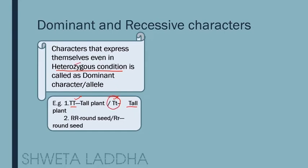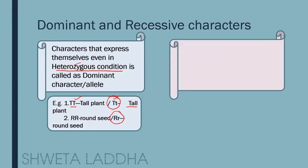Another example: capital R capital R is a round seed in homozygous condition, but this roundness can express itself also in heterozygous condition — it also comes to be a round seed.